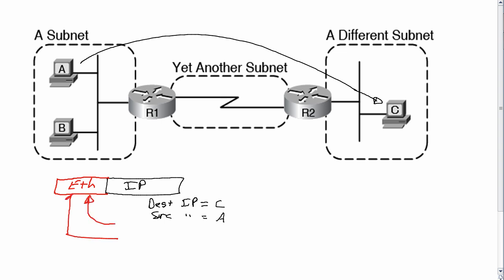The source MAC will be A's MAC and the destination will be R1's MAC — not Host C's MAC. That's usually the thing that surprises people. Now why is it R1's MAC? Well, the Ethernet frame's job is to deliver the packet from Host A over to R1.